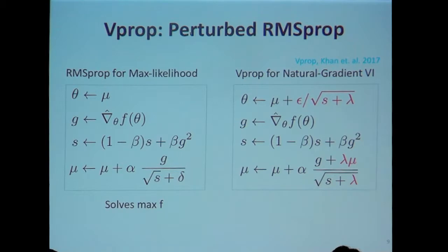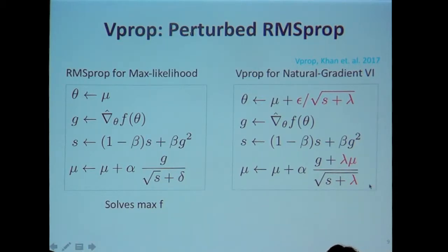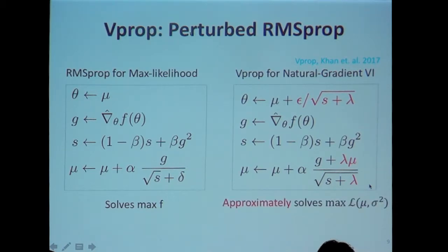Overall, I update only the mean parameter and add some contribution from the prior. This goes approximately to the solution of the variational objective — it doesn't solve it exactly; there is an approximation in the gradient magnitude, but it does the job. This algorithm is what I want to convince you is natural gradient descent for variational inference — an approximate natural gradient variational inference using perturbed RMSProp.